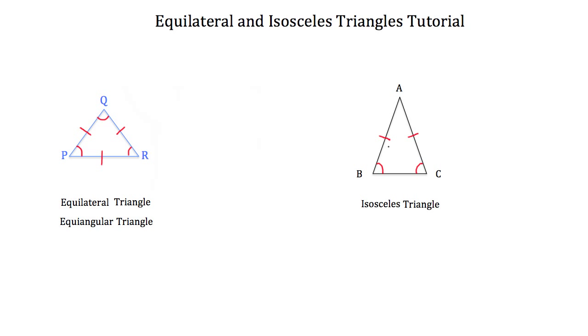So for example, the triangle that we've drawn here is triangle ABC. You can see that side AB is congruent to side AC. What that means is that the angle directly across from each of those sides is also congruent. So angle C that is across from AB must be congruent to angle B, which is across from side AC.